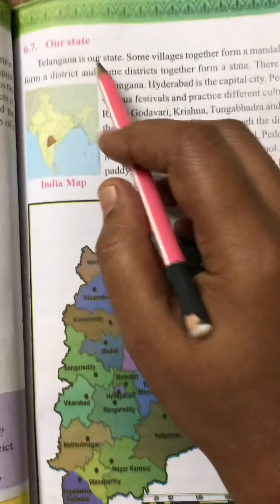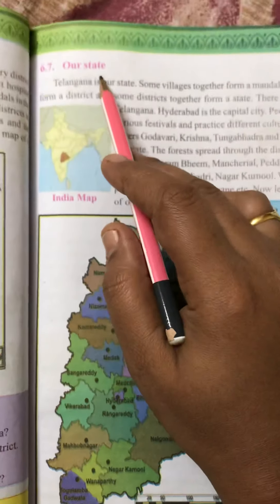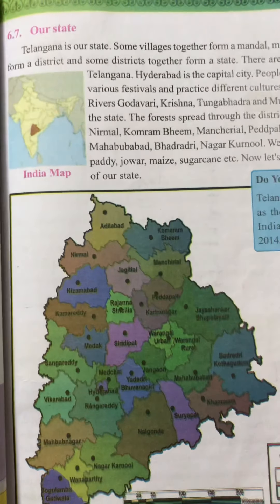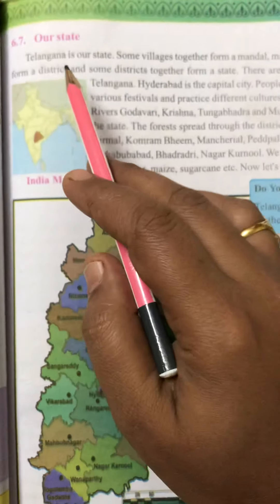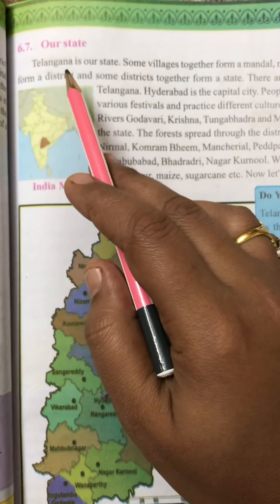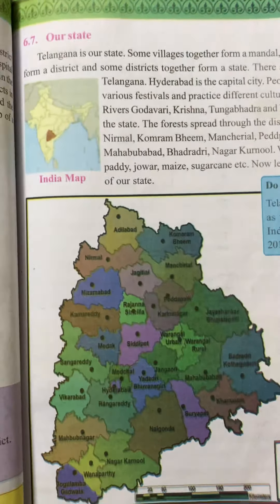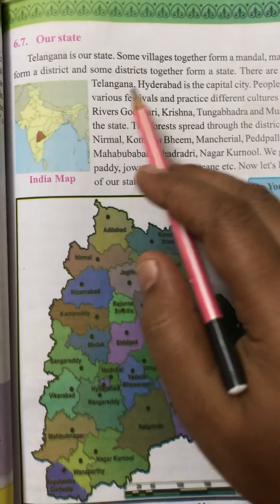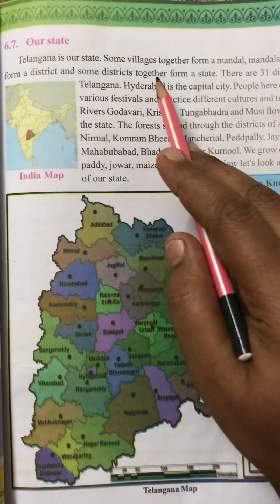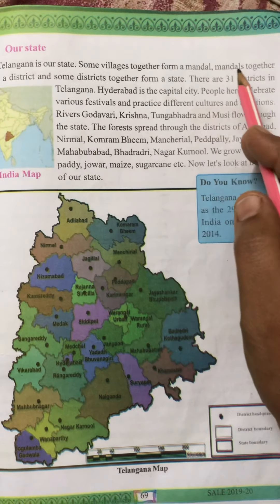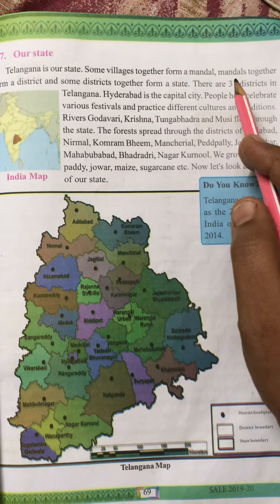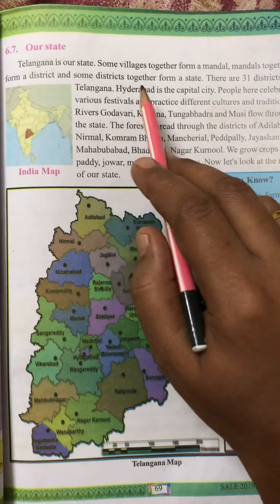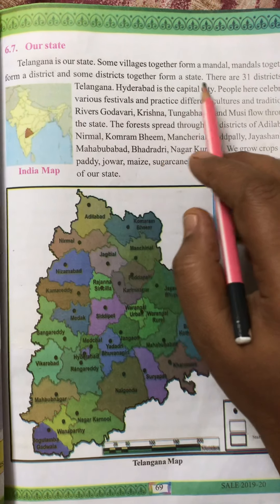Next, our state: Telangana is our state. Some villages together form a mandal. Mandals together form a district. Some districts together form a state.